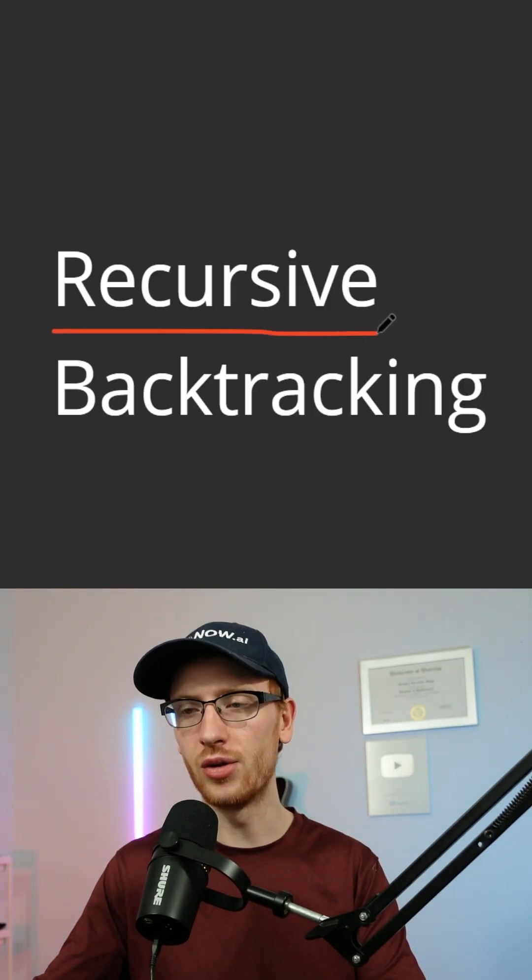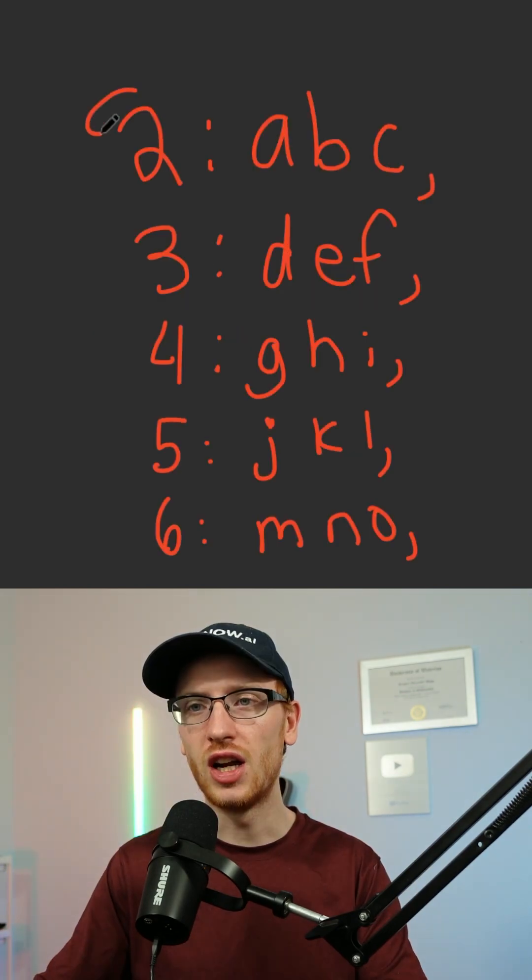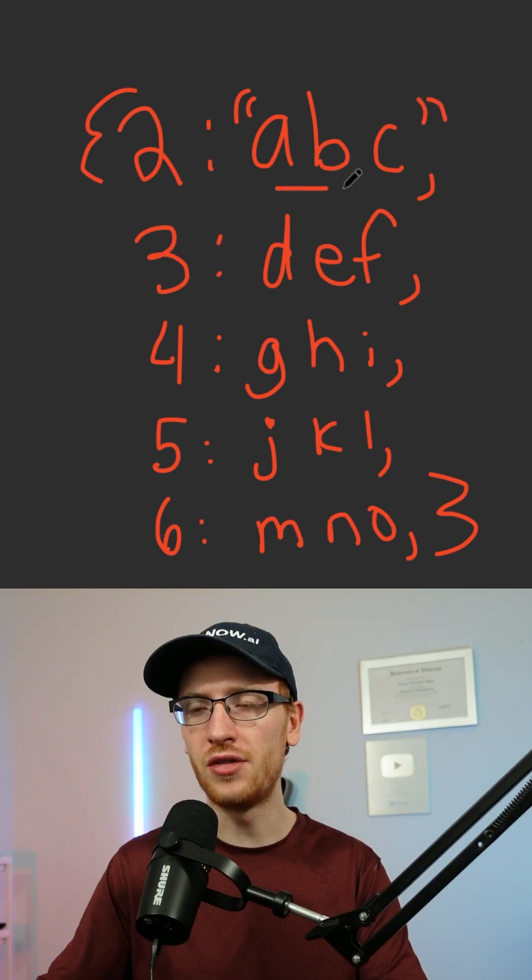And to solve this, we'll use a classic algorithm known as recursive backtracking. We would also want a hash map that had each key as the number, and its value is the string of all the letters it represents.